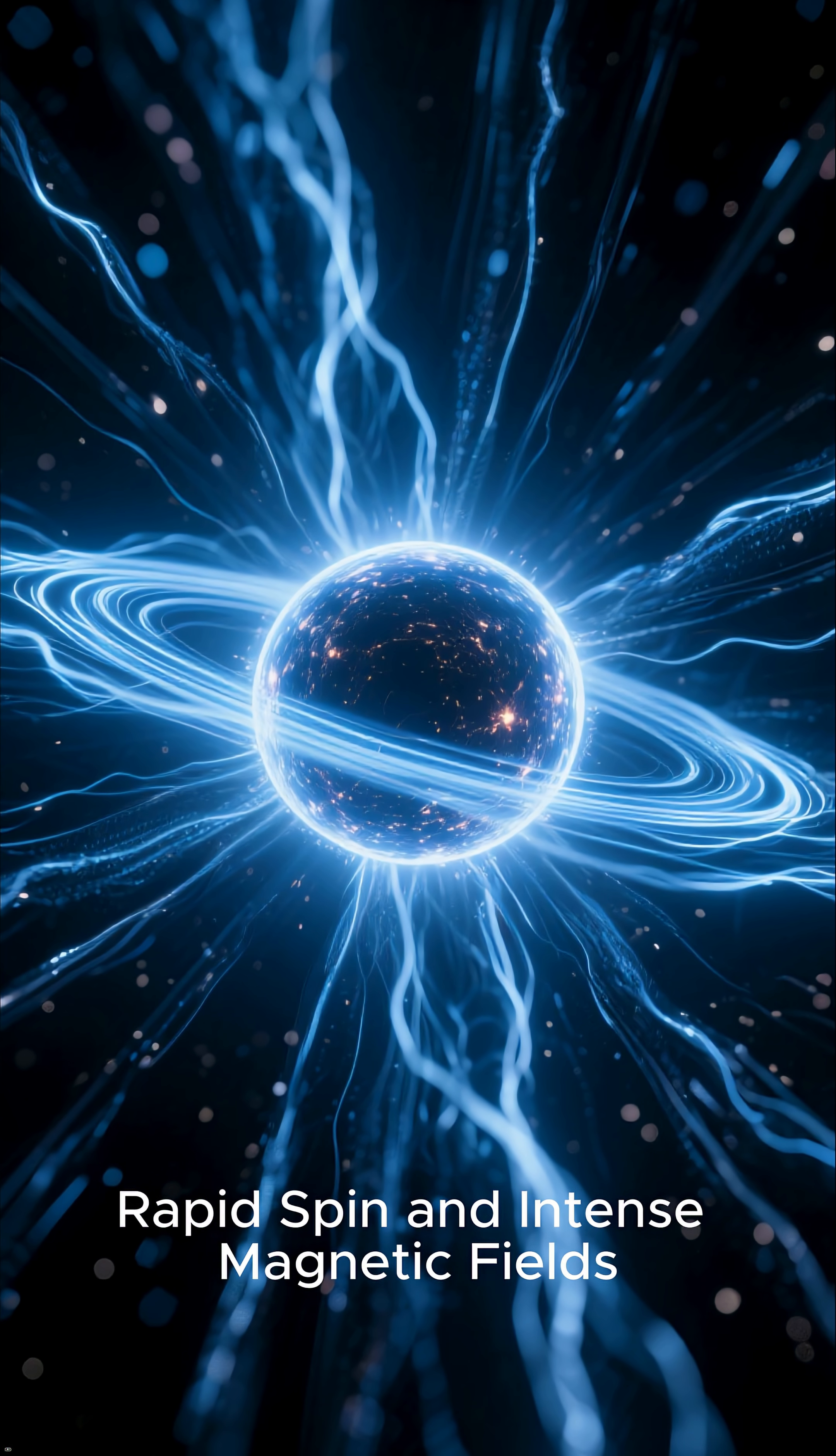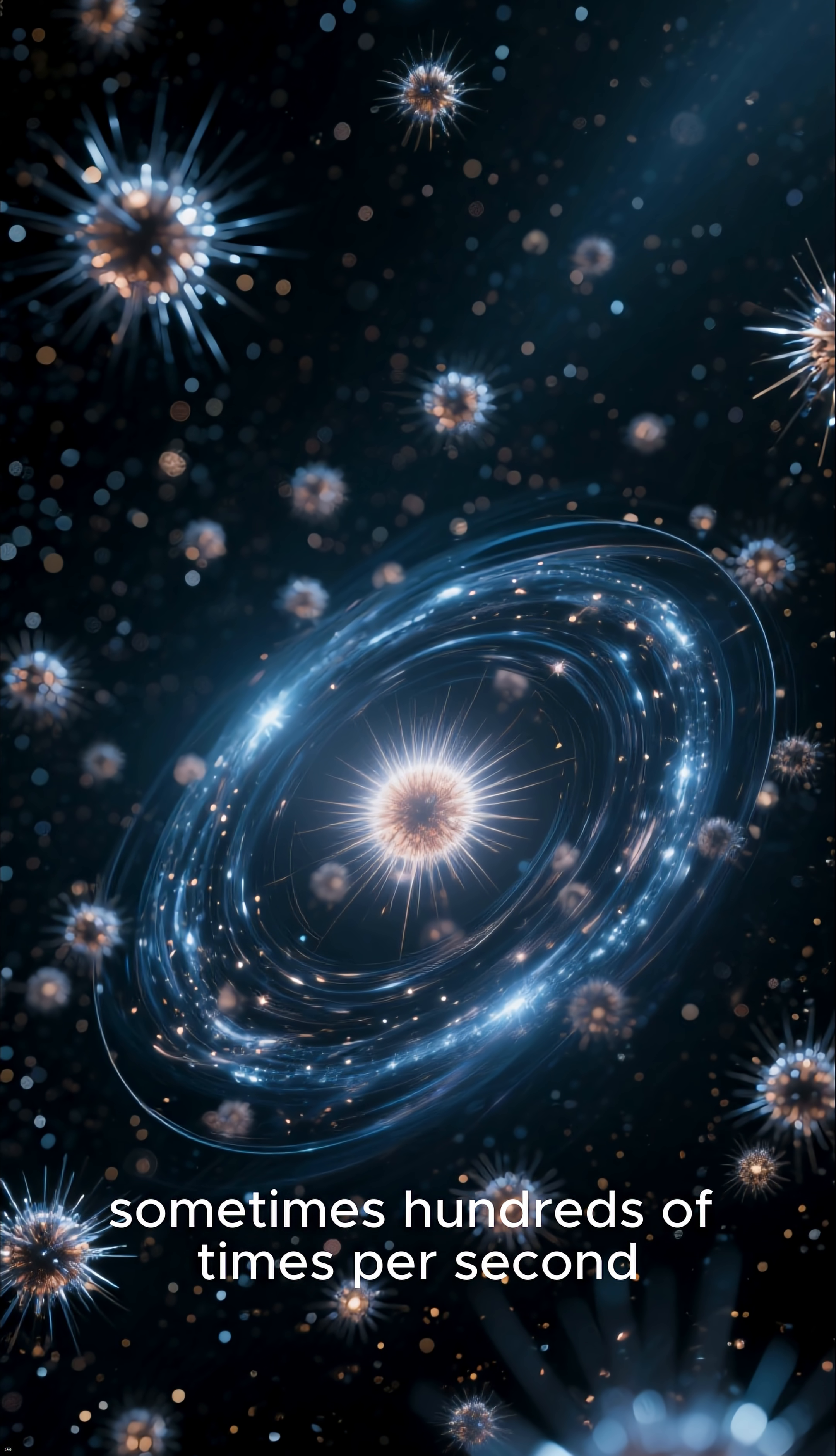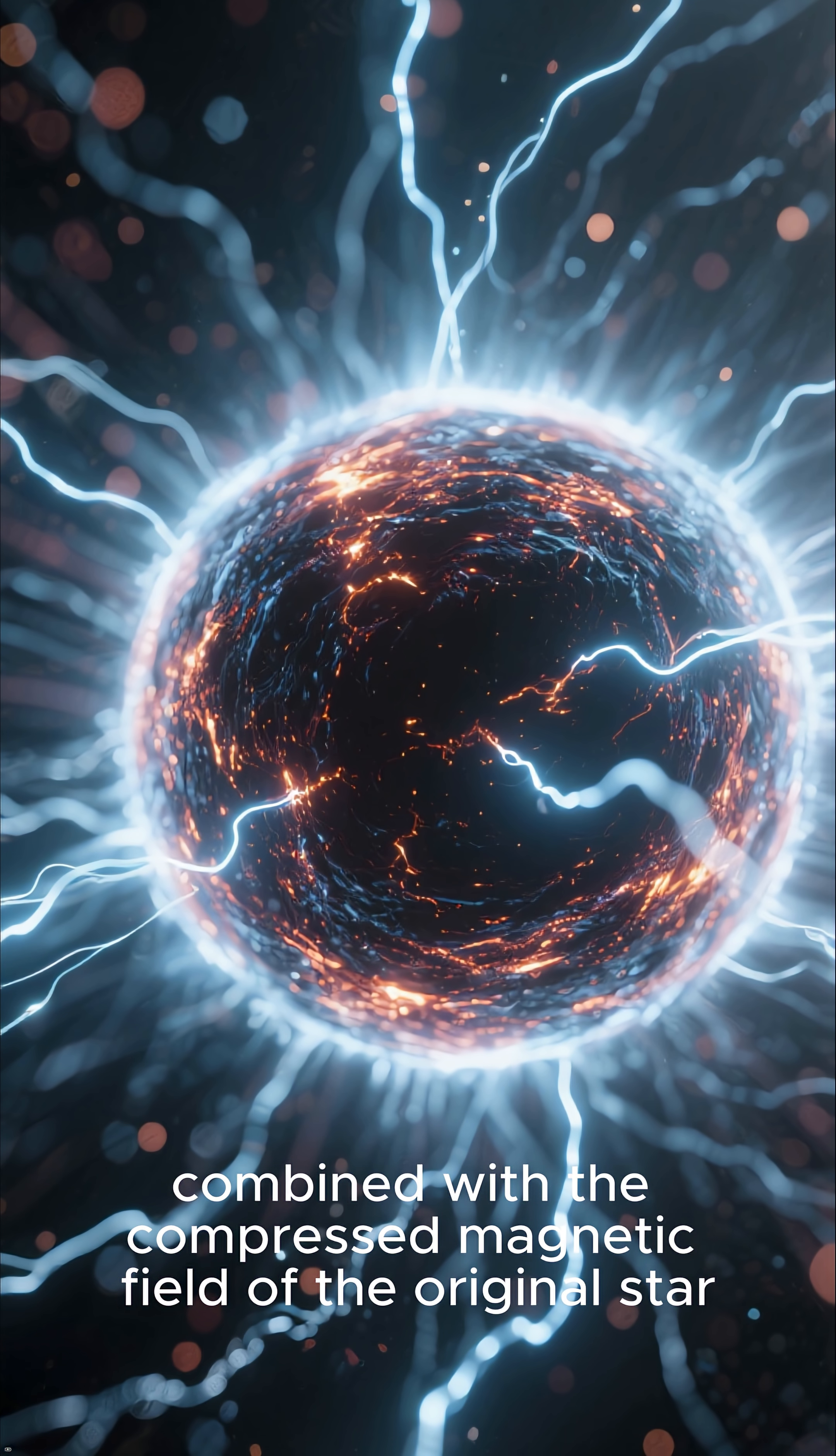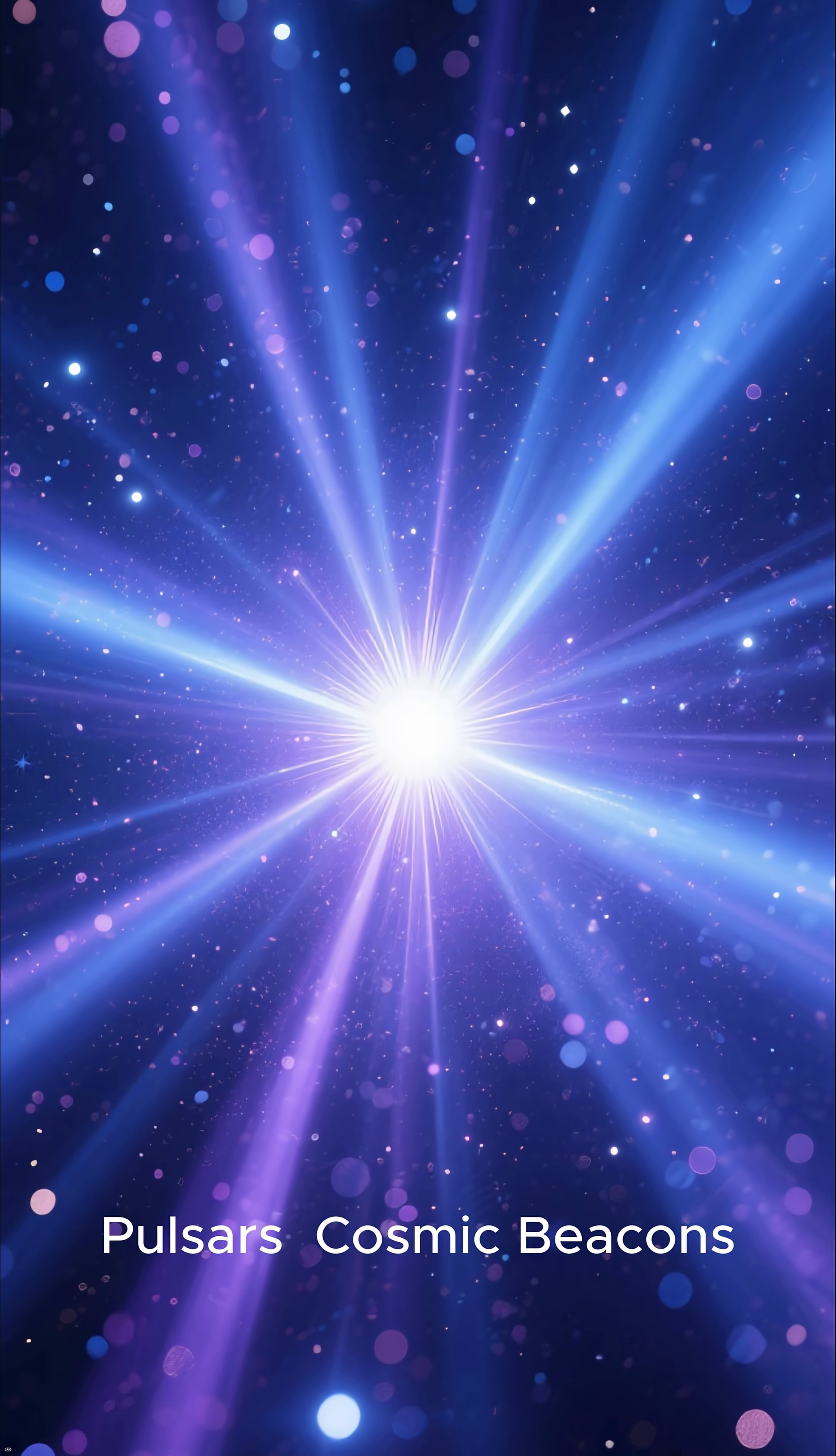Rapid spin and intense magnetic fields: let's talk about their characteristics. Many neutron stars rotate incredibly rapidly, sometimes hundreds of times per second. This rapid rotation, combined with the compressed magnetic field of the original star, creates some of the strongest magnetic fields known in the universe, trillions of times stronger than Earth's.